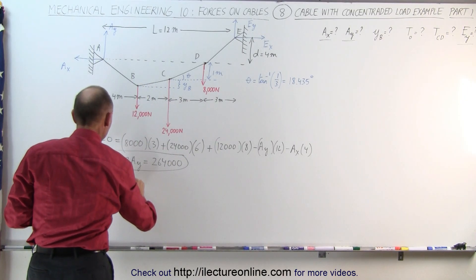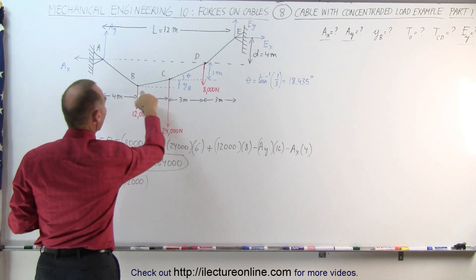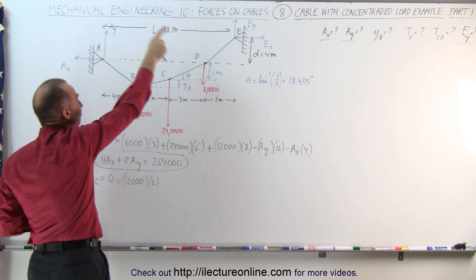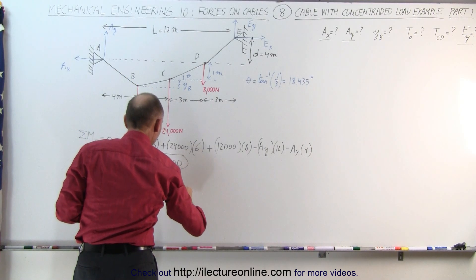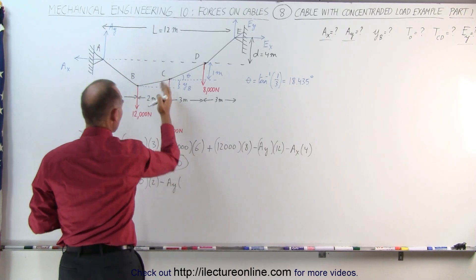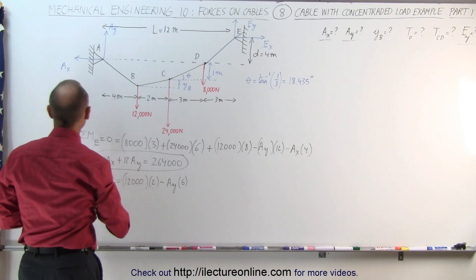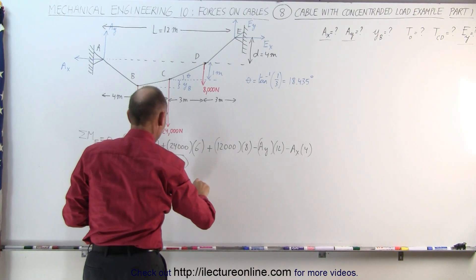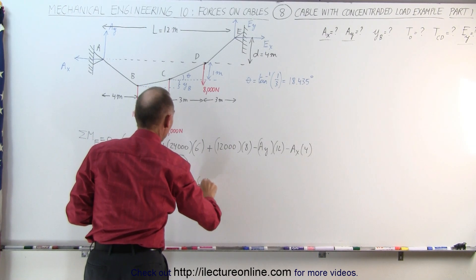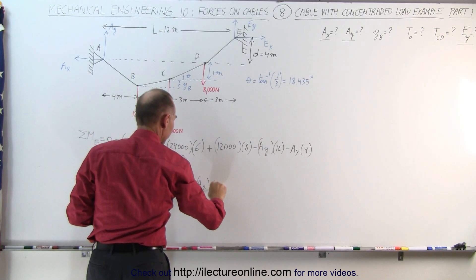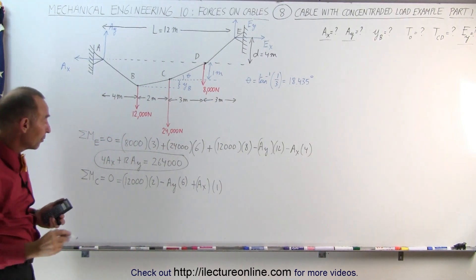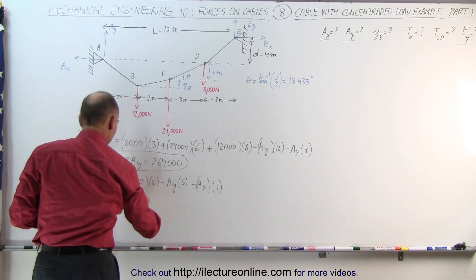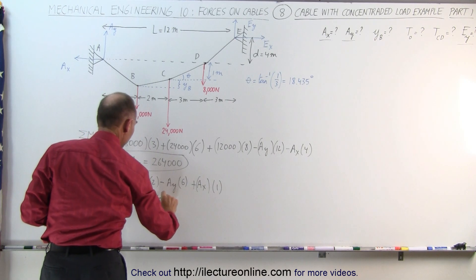The 12,000 N force creates a counterclockwise moment, so positive 12,000 multiplied times 2 meters. We have A sub Y, which is a clockwise moment: minus A sub Y times 6 meters. And A sub X will give a counterclockwise moment about point C, so plus A sub X times 1 meter. Solving that equation and moving terms across gives us: minus A sub X plus 6 A sub Y equals 24,000.